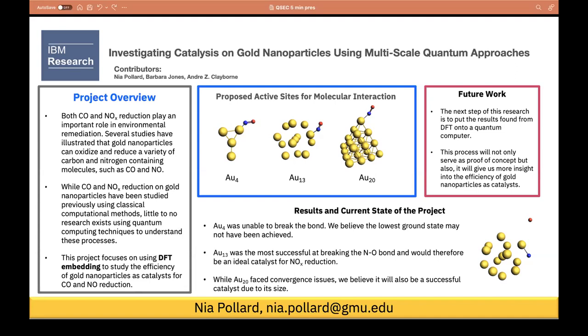I also would like to touch on why we decided to use gold nanoparticles for this project. Although gold was originally thought to be chemically inert, scientists discovered that gold exhibits chemical activity at the nano scale almost 30 years ago. A scientist named Haruta observed a low temperature oxidation of carbon monoxide with oxide supported gold nanoparticles, and since then, several studies have illustrated that gold can oxidize and reduce a variety of molecules. While catalysis on gold nanoparticles has been studied computationally before, little to no work exists on using quantum computing to study the reactivity of these systems.